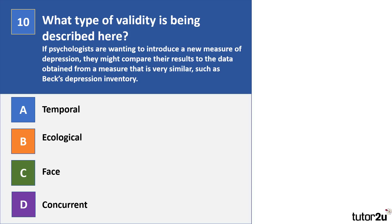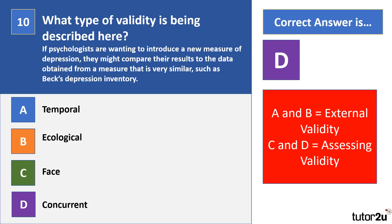Question 10. What type of validity is being described here? If psychologists are wanting to introduce a new measure of depression, they may compare their results to data obtained from a very similar measure, such as Beck's Depression Inventory. Is that A, temporal validity, B, ecological validity, C, face validity, or D, concurrent validity? The correct answer is D, concurrent validity. Temporal and ecological are methods of assessing external validity, while face validity involves checking that a measure appears on the face of it to be doing what it's supposed to.